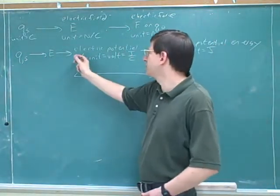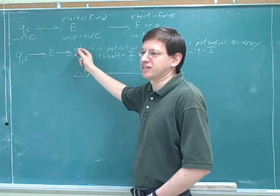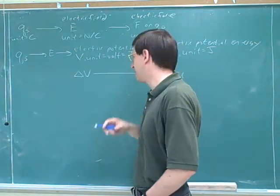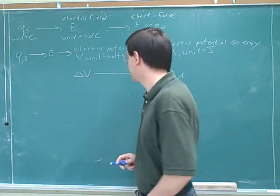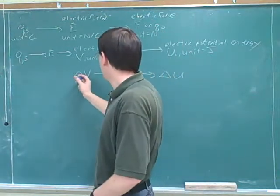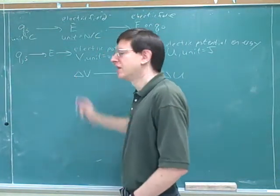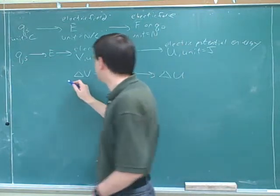Because when you just look at the potential, you're just comparing that point in space to infinity, usually. But we don't usually care about infinity. We care about two points in space. So this could be what we would call the potential difference. Another name for the potential difference is the voltage.